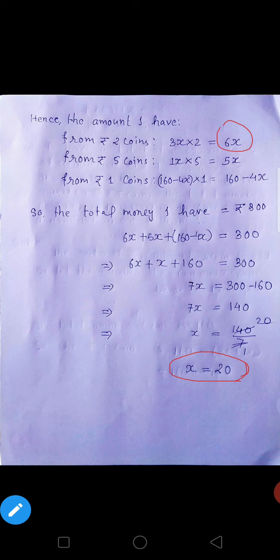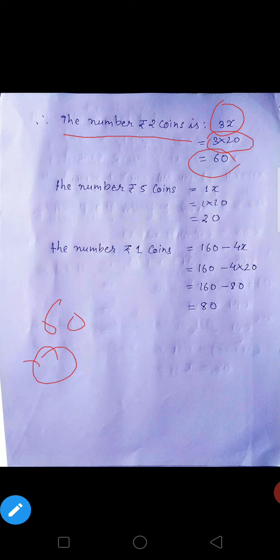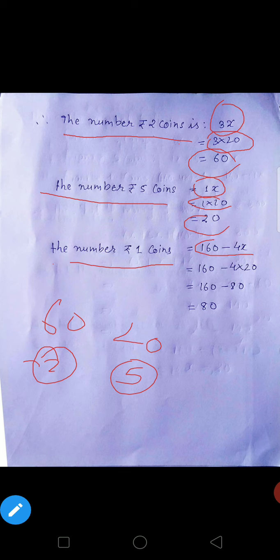Abhi hamara x ka value ko yaha yaha yaha put kar do, number of coins nikal jayega. Two coins ka kitna tha? 3x. 3 into x ka value 20, 3 into 20 is 60. So 2 rupee ka coins kitna hai? 60 hai. The number of rupees 5 coins, 5 coins ka kitna tha? 1x. X ka value kitna? 20. 1 into 20 is 20. So 5 rupee wala coins kitna hojayega? 20 hojayega. The number of 1 coins, 1 coins ka kitna tha? 160 minus 4x tha. 160, 4 into 20, 80. 160 se 80 minus karo 80. So 1 rupee wala coins kitna hai? 80 hai.